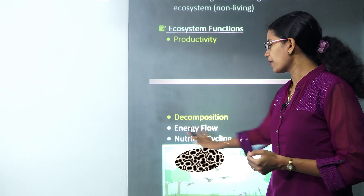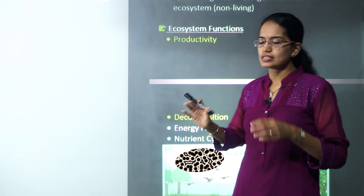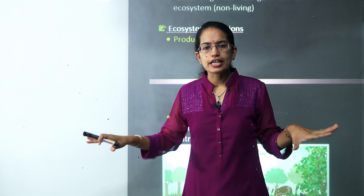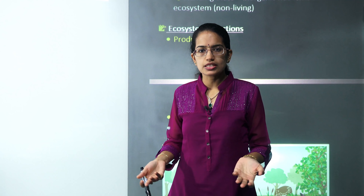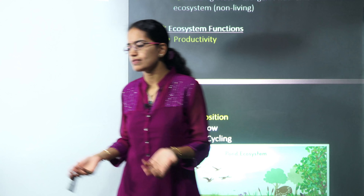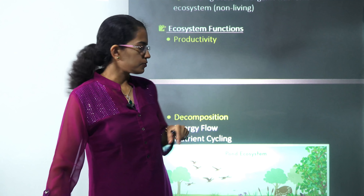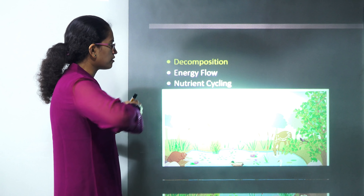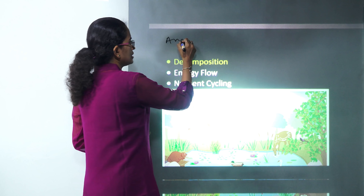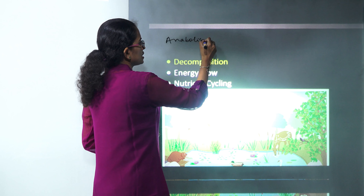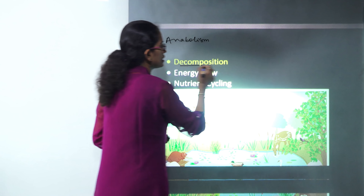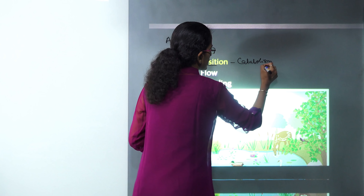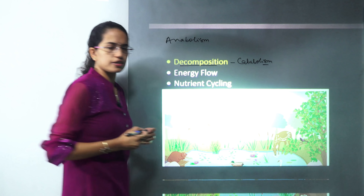Under decomposition, the existing molecule breaks off and there is release of energy; this breakdown is also known as catabolism. Joining of material together is anabolism, seen in productivity; under decomposition we see catabolism. Those two terms are important to remember.